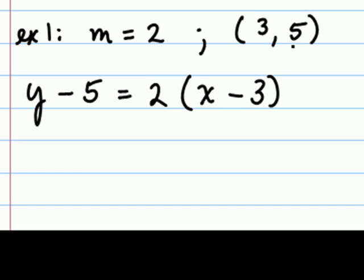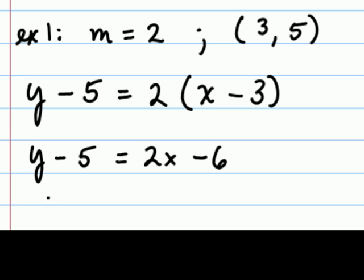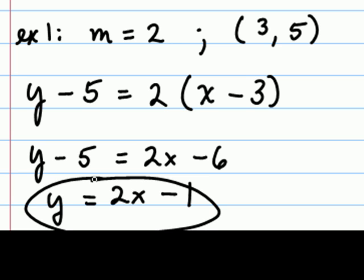Yet, we typically like to write our linear equations in slope-intercept form, which is y equals mx plus b. To do that, we will first distribute the 2, then add the 5 to both sides. At this point, this is the slope-intercept form of the equation: y equals 2x minus 1.